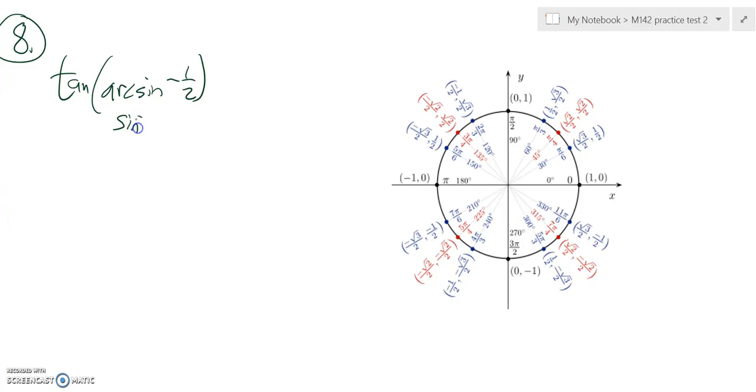And remember arcsine, it just means inverse sine, so it just means inverse sine of negative one-half. So we're going to find the angle that this spits out, and we're going to find the tangent of that angle.